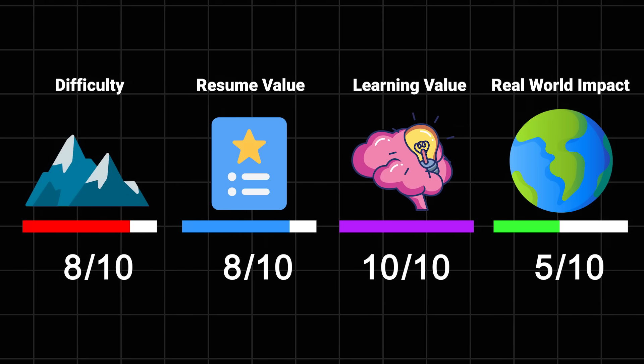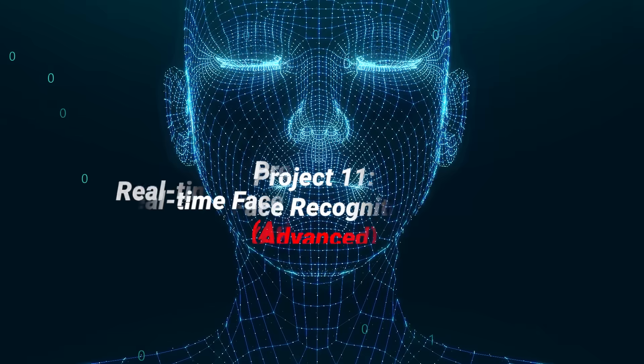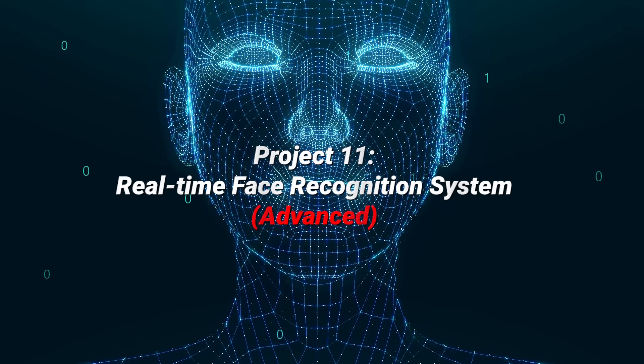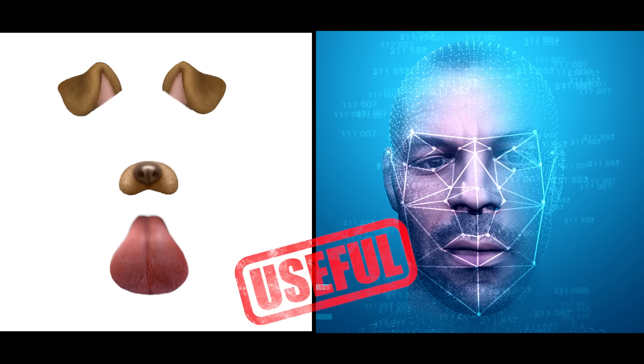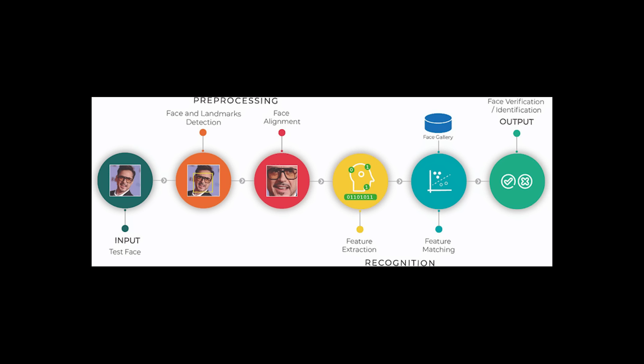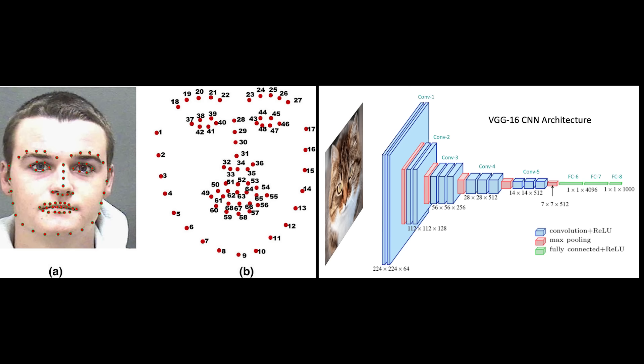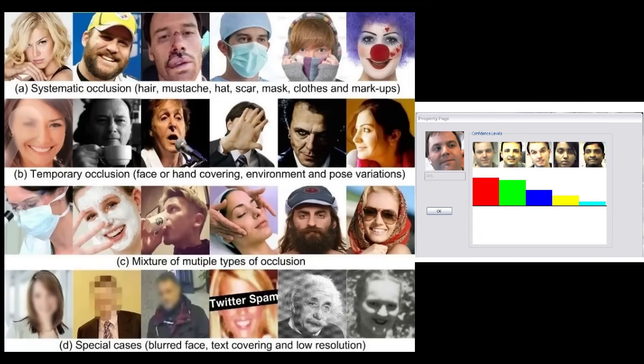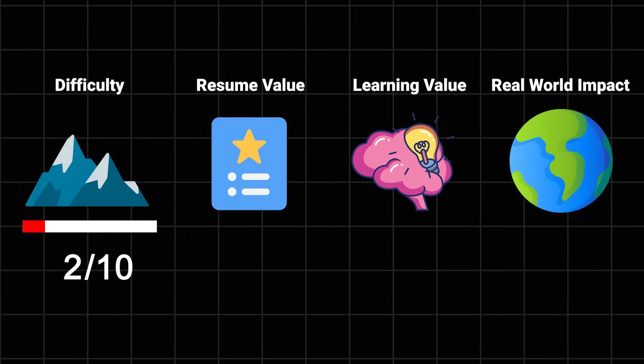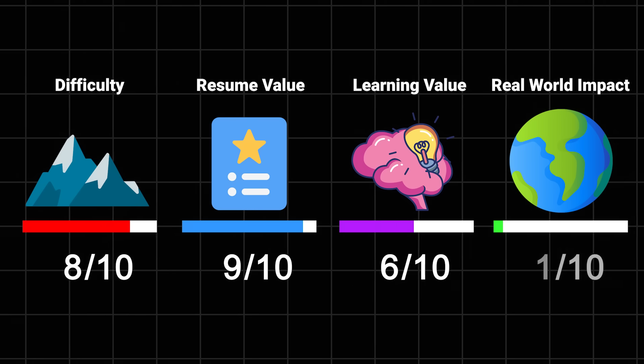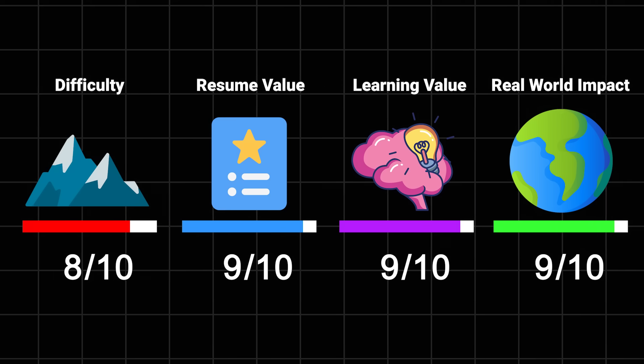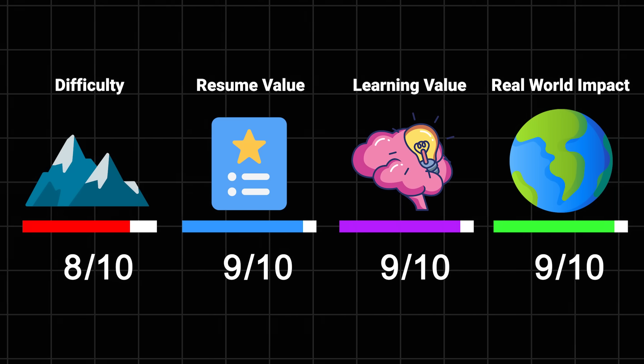Real-time face recognition system. Now we're getting into the cool stuff. You'll build a system that can recognize faces in real time. It's like building your own Instagram filter, but actually useful. This might seem daunting, but you can reuse a lot of the skills and even some code from earlier projects here. You'll learn about computer vision, deep learning, and why your webcam feed keeps crashing. Plus, you'll understand why your phone's Face ID sometimes doesn't recognize you at 7 in the morning. Difficulty: 8 out of 10. Resume value: 9 out of 10 - companies love this. Learning value: 9 out of 10. And impact: 9 out of 10 if you can make it recognize your mom's face. Okay, I think I'm done with this joke now.